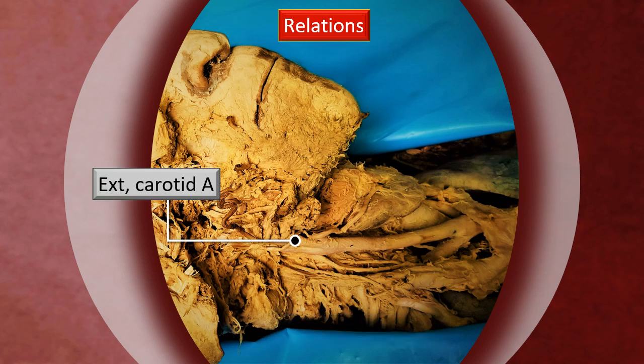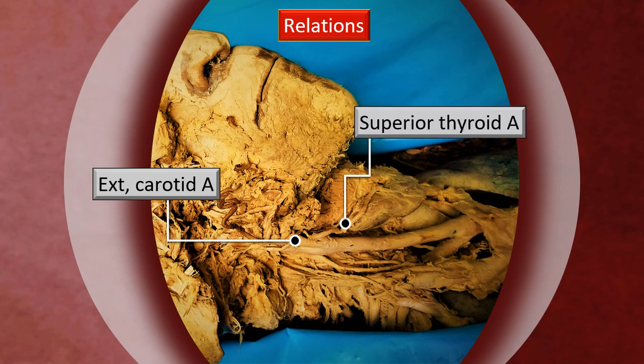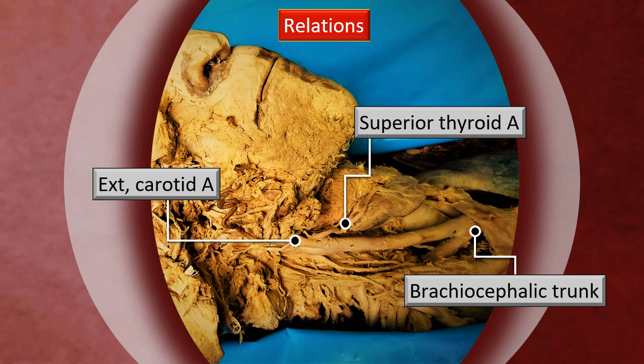You can see the external carotid, and deeper is the internal carotid. That's the superior thyroid branch of the external carotid. In context, you can see the brachiocephalic trunk, from which the right common carotid and the right subclavian bifurcate as two branches.